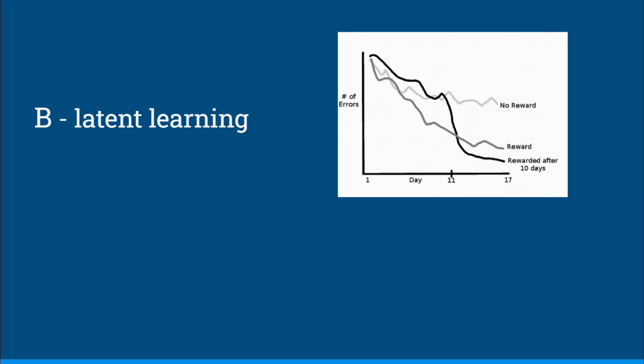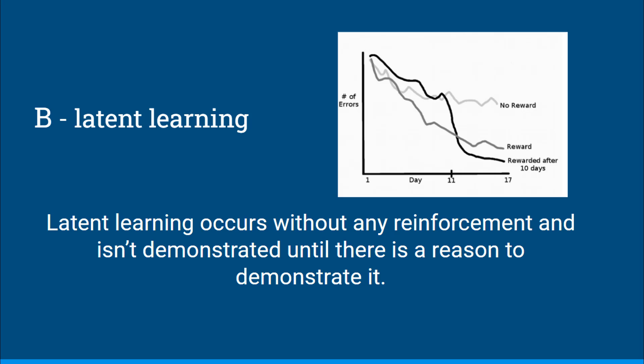And this would be B, latent learning. Latent learning occurs without any reinforcement but it isn't demonstrated until there's a reason to demonstrate it. Julie would have learned these words without being rewarded in the past, but she wouldn't have any reason to show that she knew them until this situation came where now she can show that learning.